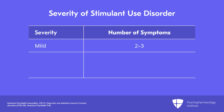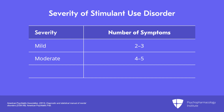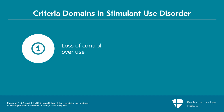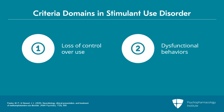Two to three of the criteria would be a mild disorder, four to five would be moderate, and six through eleven would be severe. The criteria can be broken down into two domains: one is loss of control over use, and the other is beginning to develop dysfunctional behaviors because of the substances.